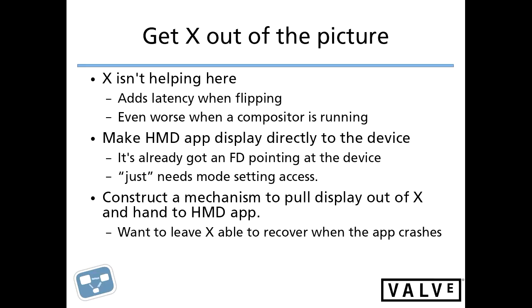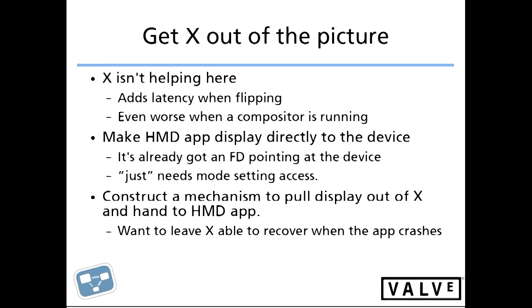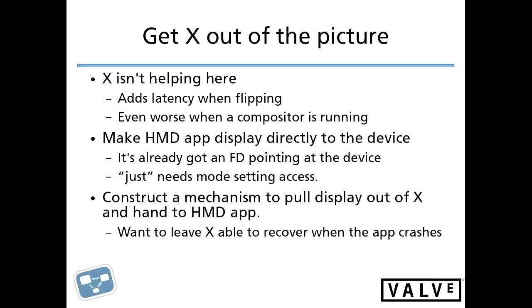We're going to make the HMD app display directly to the device. In the DRM environment — the Direct Rendering Manager — which is how we do 3D graphics in Linux, the DRM client already talks directly to the kernel for all of its rendering. Applications don't talk to the window system when they want to do 3D graphics; they talk to the kernel. So I've already got a kernel file descriptor talking to the device. All I need to do is make that file descriptor more capable, or get another one that can do the additional things I need — specifically, add direct mode-setting ability to this application.